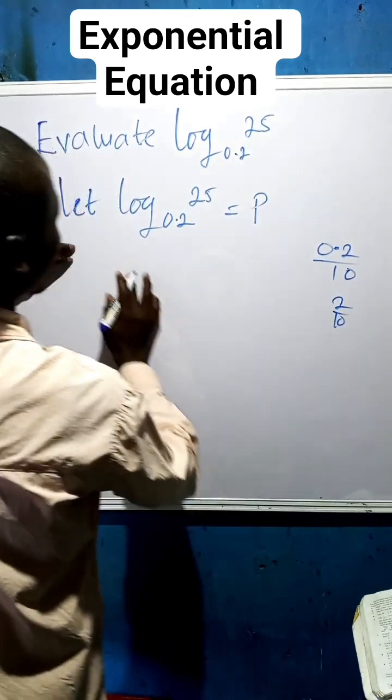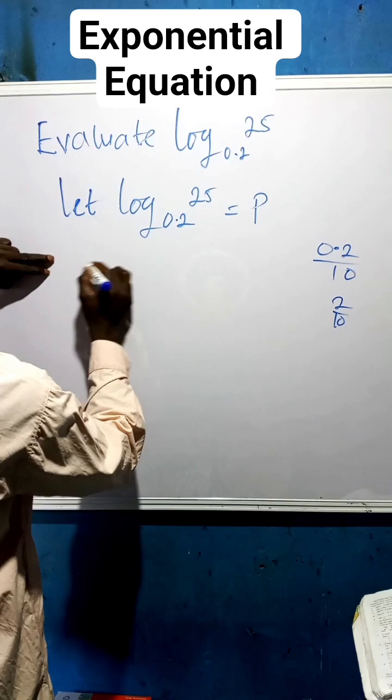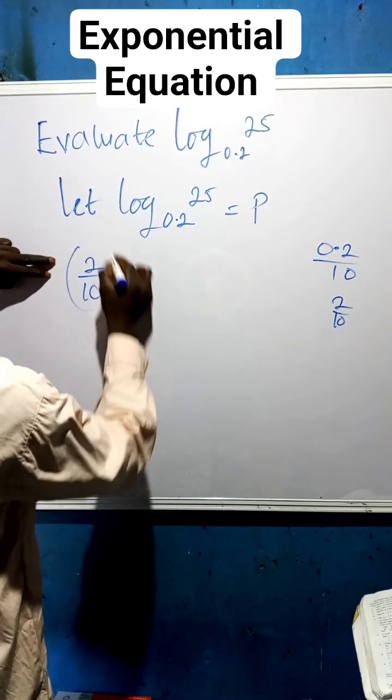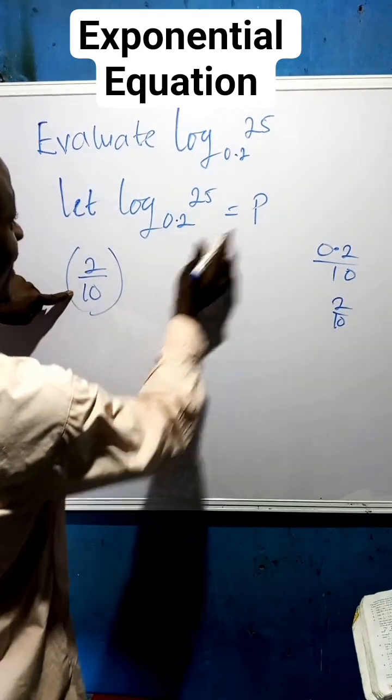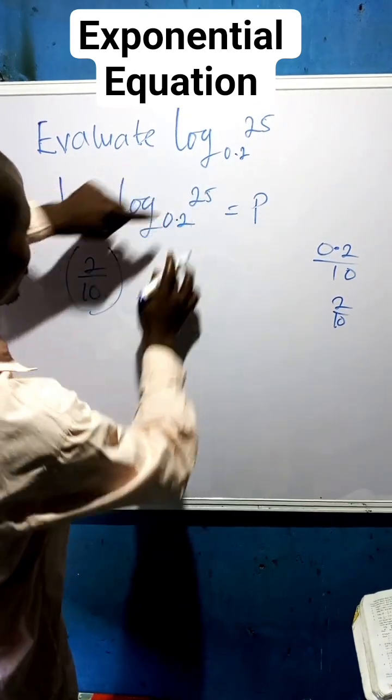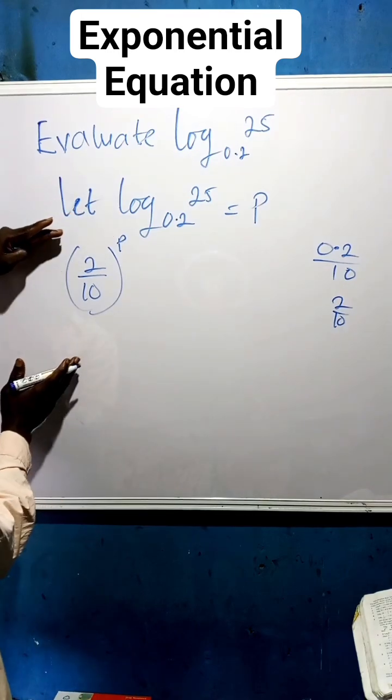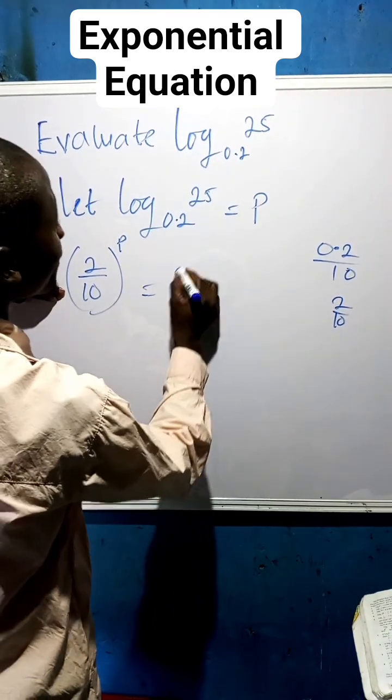So now 2 over 10. You can equally write this to be 2 over 10, then the power - remember this power will come on top of this - which is 2 over 10 to the power of P. Hope you are not confused. And this equals to 25.